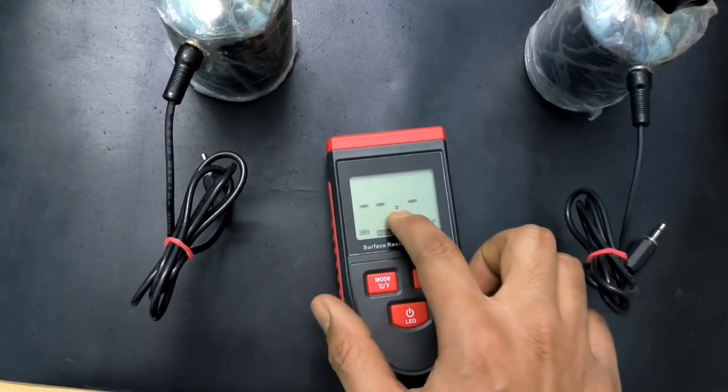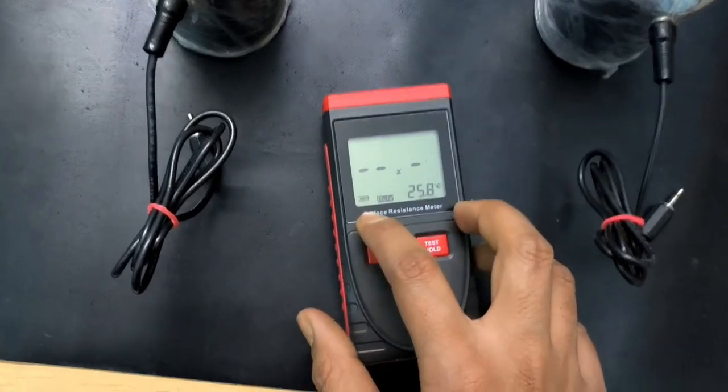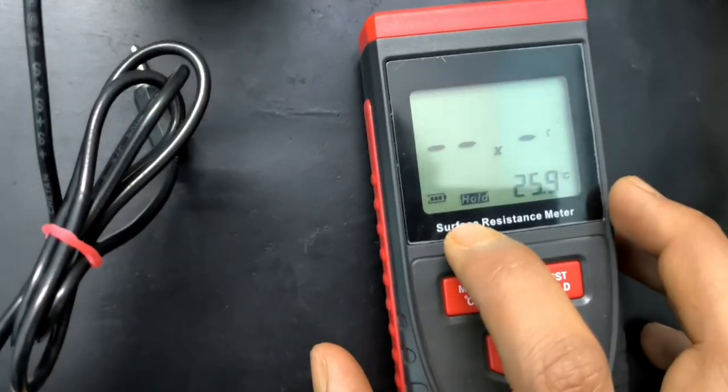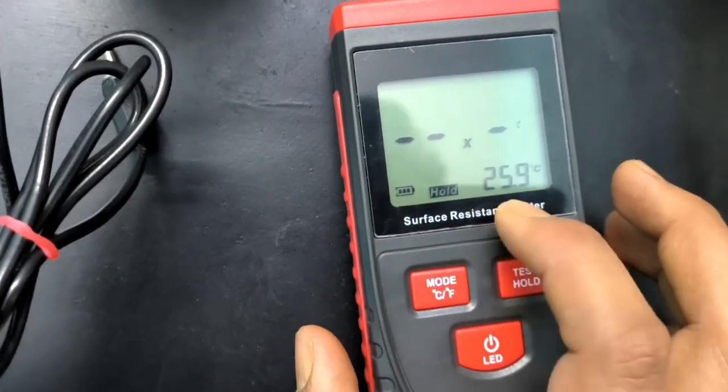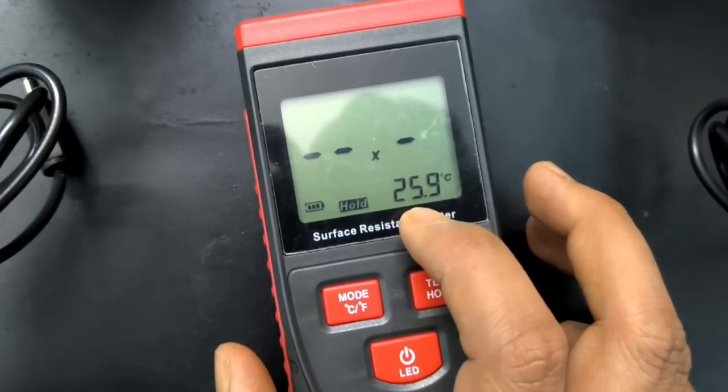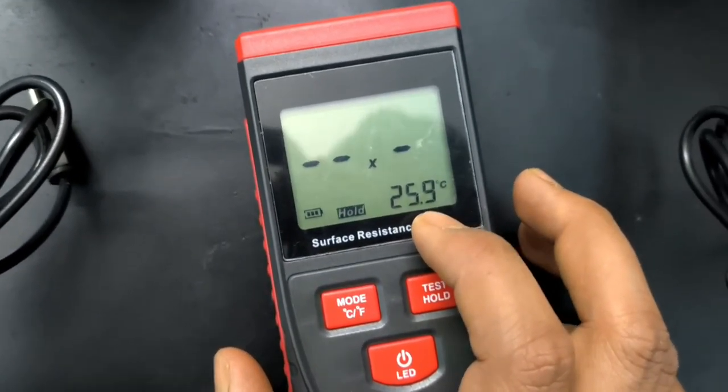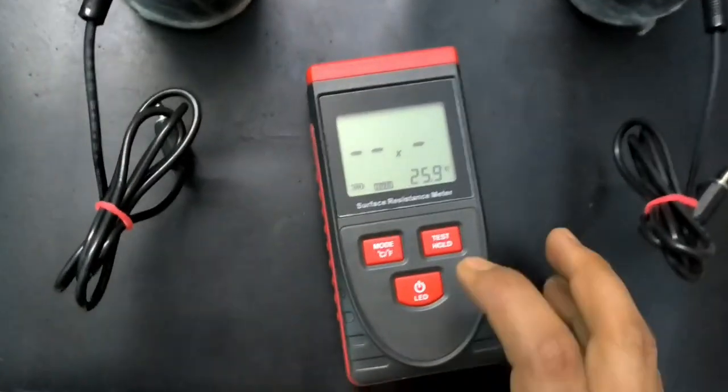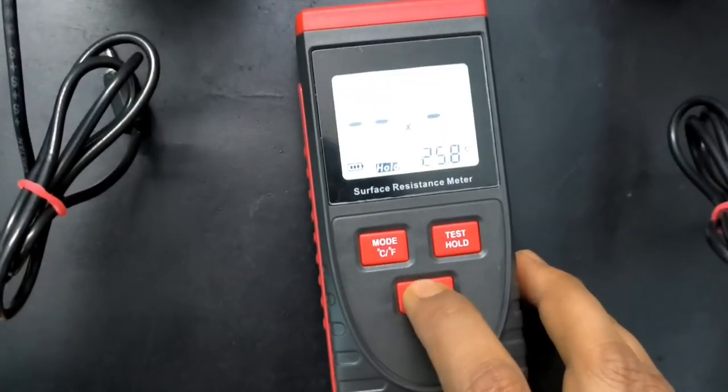If you press it, it will turn on. Now there is no reading but it's showing the battery status - you can see it's a full battery - and the temperature is showing 25.9 degrees Celsius. This one, as I told you, is for the light.